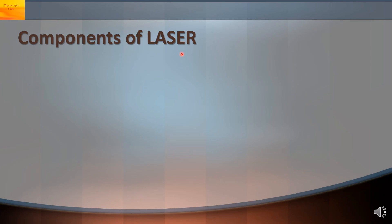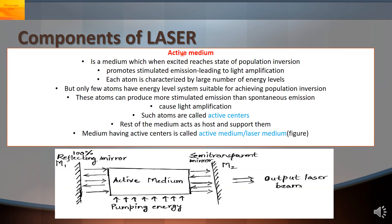Components of laser. The diagram shows an active medium. That is the first component of the laser. The active medium is a medium which when excited reaches the state of population inversion. That is the number of atoms in the higher state will be more than that in the lower state. So when this state of population inversion is achieved that promotes stimulated emission.